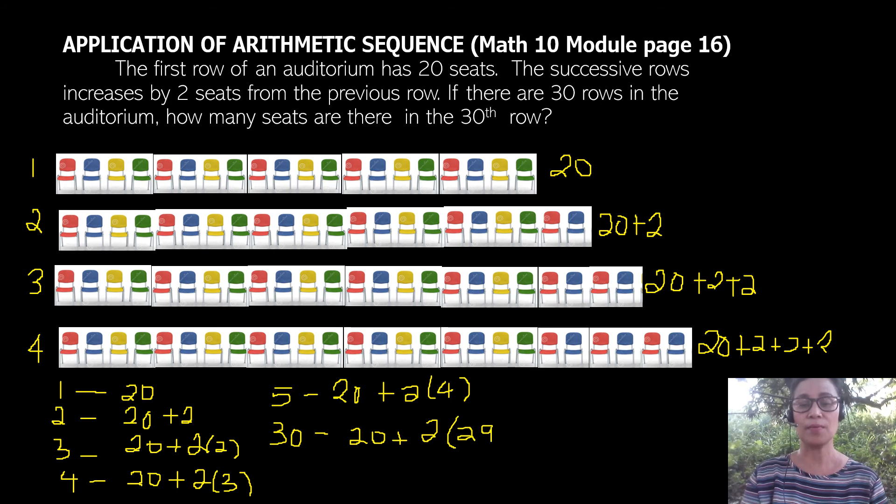Now we can solve this. Our 30th row - 2 times 29 is 58 plus 20, so the 30th row would have 78 seats.